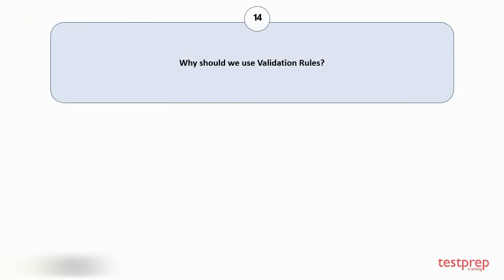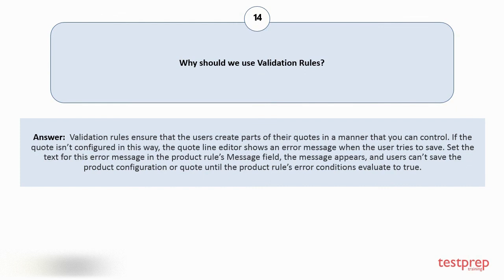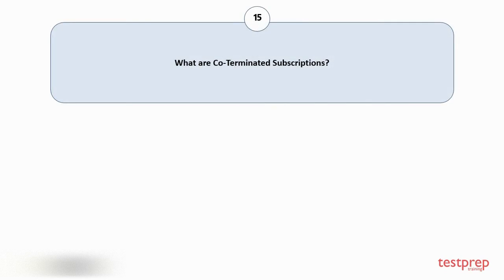Question number fourteen: Why should we use validation rules? Validation rules ensure that users create parts of their quotes in a manner that you can control. If the quote isn't configured correctly, the quote line editor shows an error message when the user tries to save. Set the text for this error message in the product rule's message field. The message appears and users can't save the product configuration or quote until the product rule's error conditions evaluate to true.